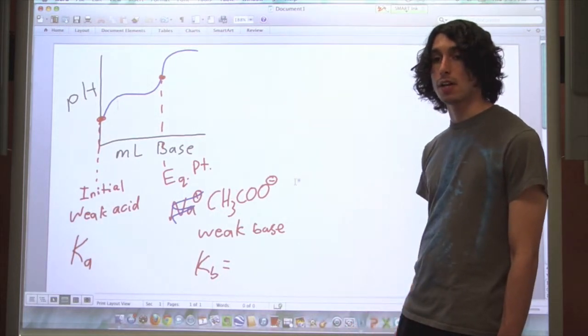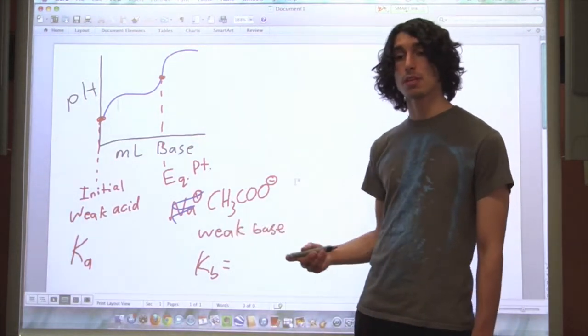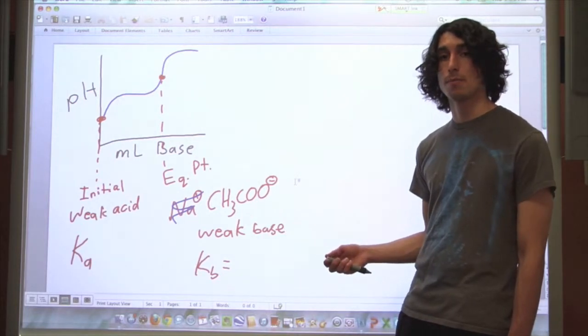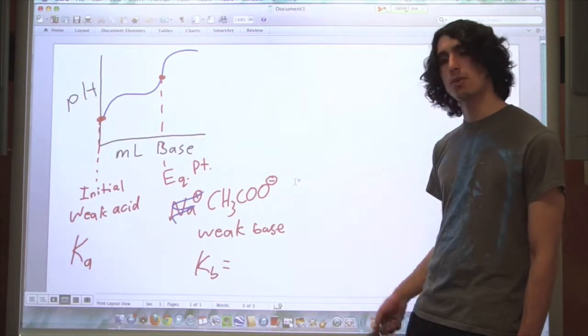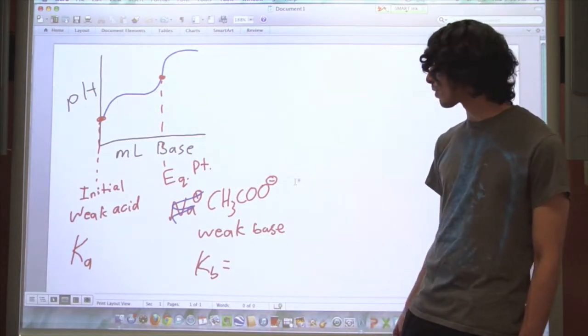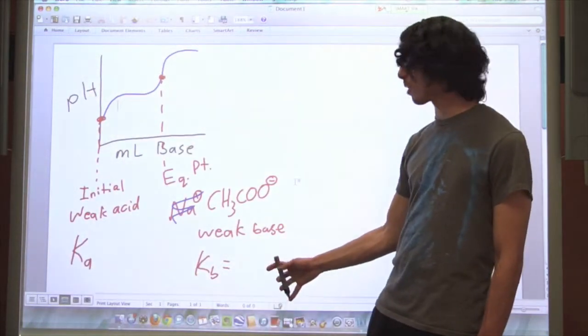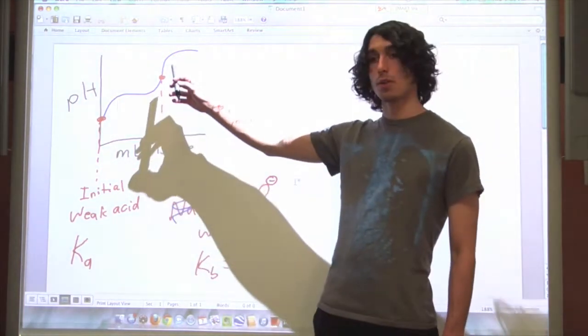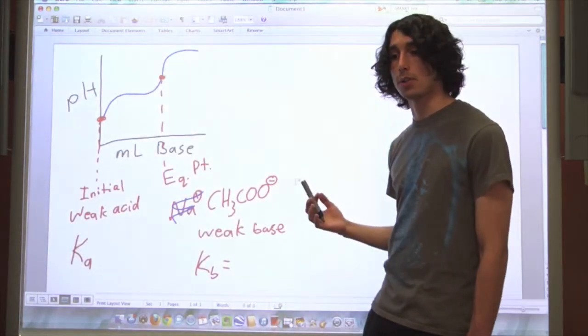From there, you can find either the concentration of hydronium ions, and from there, the pH, or you can solve for the pOH from the concentration of hydroxide ions, and then relate that to the pH. Both are essentially the same method. It's just whether or not you take the log first or second. So here we have these two points, which are both simple equilibrium problems. One where you have a weak base, where all the acid's been used up at the equivalence point, and one where you have a weak acid, which is what we started with initially.